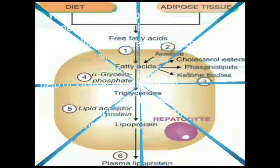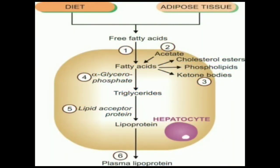Lipoproteins are released from the cell into the circulation as plasma lipoproteins — that is, low density lipoprotein and very low density lipoprotein. In this chart we can see that free fatty acid enters from diet as well as from adipose tissue, and a small amount is also synthesized in the liver through acetate. Most free fatty acid is converted into triglyceride with the help of alpha-glycerophosphate, and a small amount is converted into cholesterol, phospholipid, and ketone bodies. The triglyceride is then converted into lipoprotein with the help of lipid acceptor protein and released into circulation.